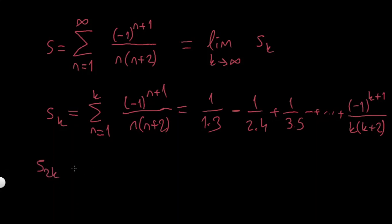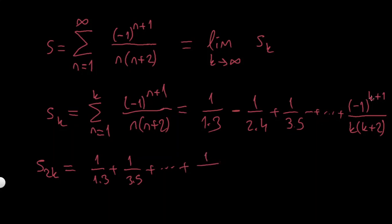Instead, let's check S2k. Because if I use S2k, now I know what the last term is. If I substitute 2k instead of k, this is going to end up with a minus term. So I'm writing S2k and will group terms as positives and negatives. The positive terms go 1 over 1 times 3, plus 1 over 3 times 5, up to 1 over (2k−1) times (2k+1), by substituting n equal to 2k−1.